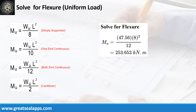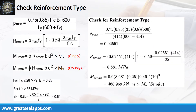Given factored load equals 47.56 kN per meter and L equals 8 meters, the maximum moment is 253.653 kN per meter. The ρ max from given design criteria is 0.02551. The RN max is 8.681 MPa. And finally, the MU max is 468.969 kN per meter, greater than 253.653 kN per meter, for singly reinforced beam design.